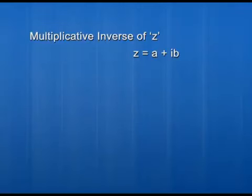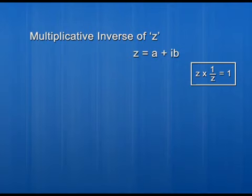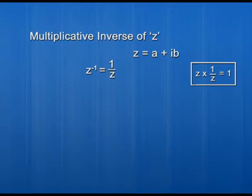Finally, let us discuss the multiplicative inverse of a complex number. Suppose z equals a plus ib. The multiplicative inverse of z is a number which, when multiplied by z, gives the result 1. That number is 1 upon z, denoted by z to the power minus 1. Now we will find what 1 upon z actually equals. Since z equals a plus ib, we have z inverse equals 1 upon a plus ib. To simplify this, we recall the technique used when rationalizing a denominator containing an irrational number.